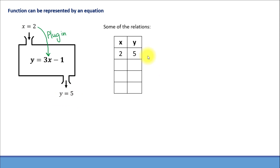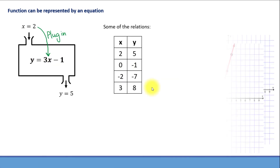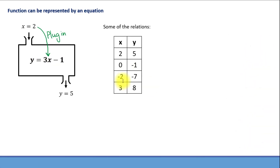Let's record this relation in a table and find a few more. If input is 0, we plug it in: 3 times 0 is 0, minus 1 is negative 1. When input is negative 2, 3 times negative 2 is negative 6, minus 1 is negative 7. And when x equals 3, 3 times 3 is 9, minus 1 is 8. So that's basically how an equation representing a function works, and of course we can find more relations.